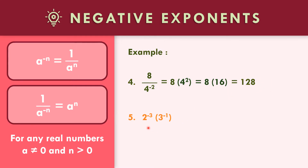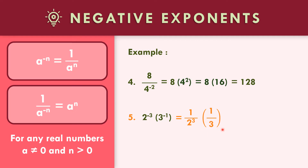How about number five? Two to the negative three times three to the negative one. Both bases have negative exponents in the numerator, so we write them in the denominator: one over two cubed, times one over three. Two cubed is two times two times two equals eight, giving one over eight times one over three. Multiplying numerators and denominators: one times one is one, eight times three is twenty-four. The final answer is one over twenty-four.